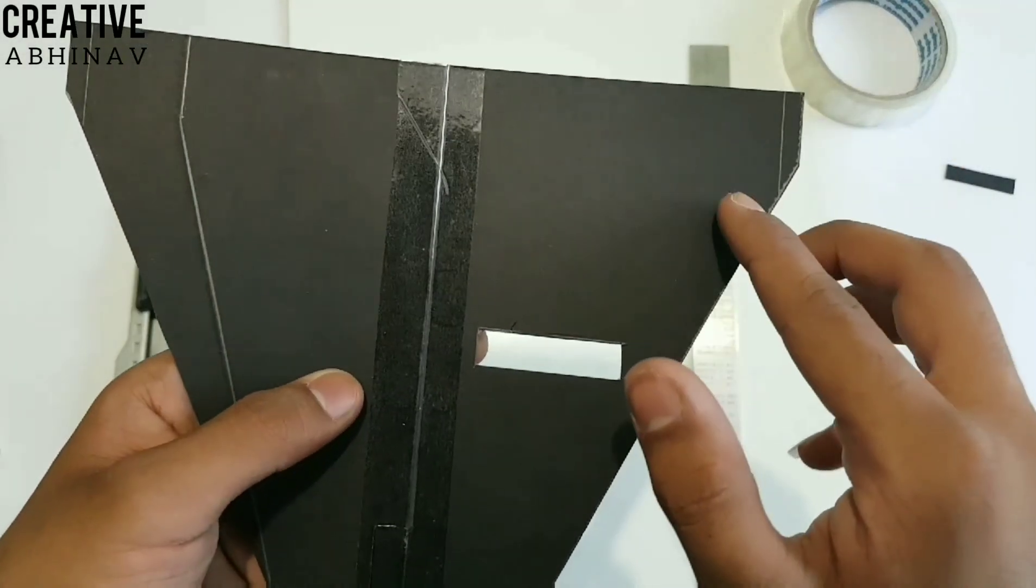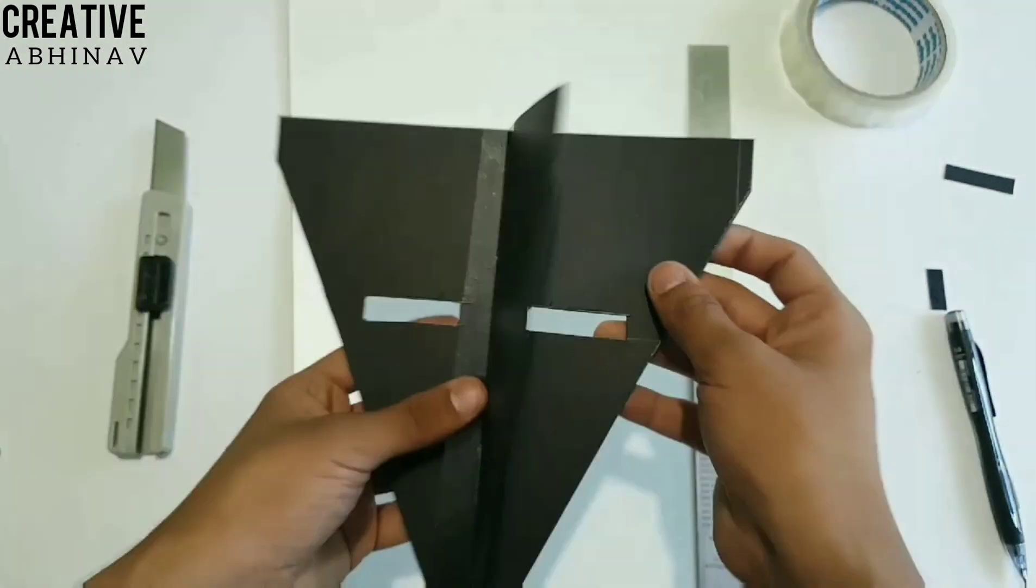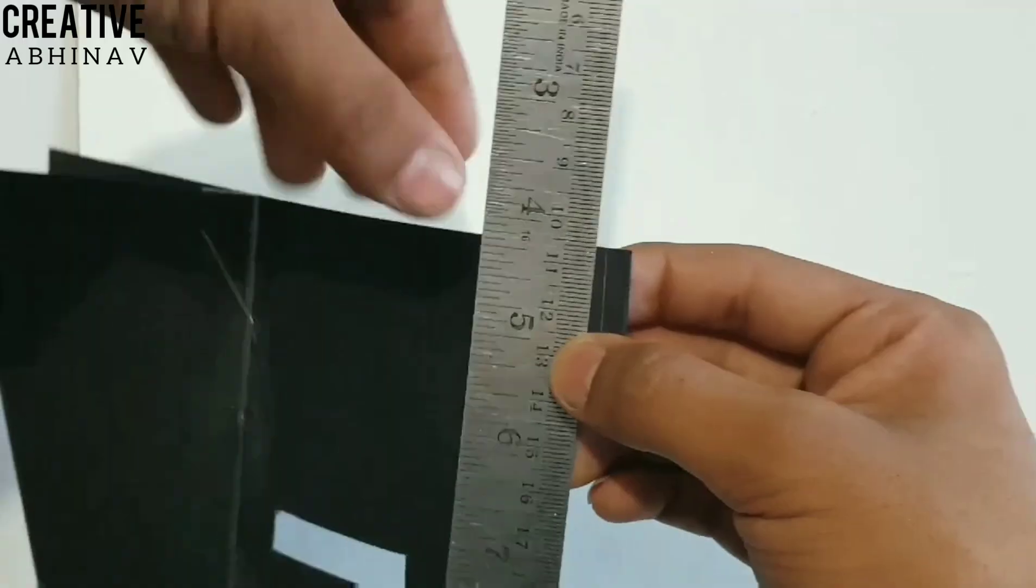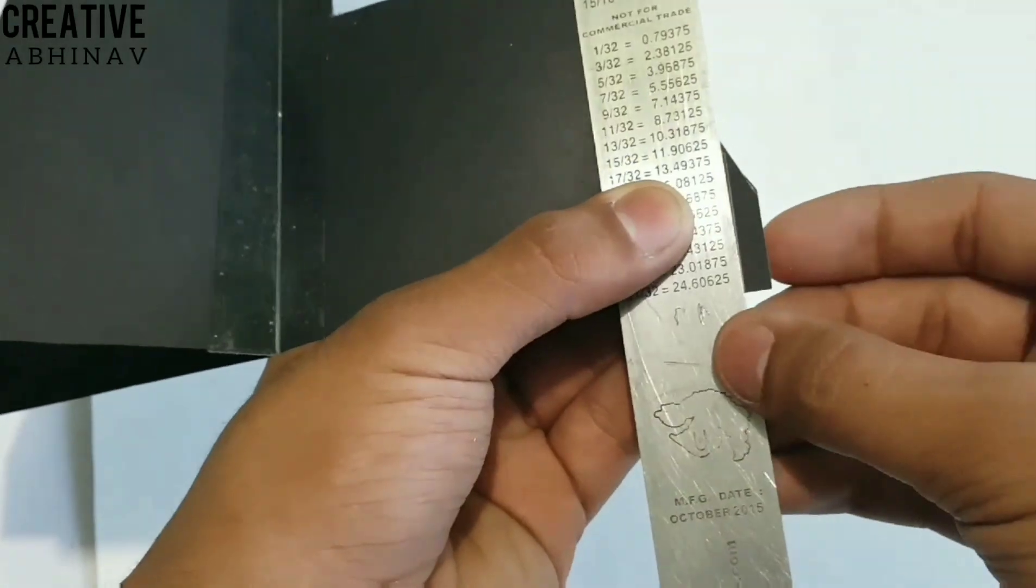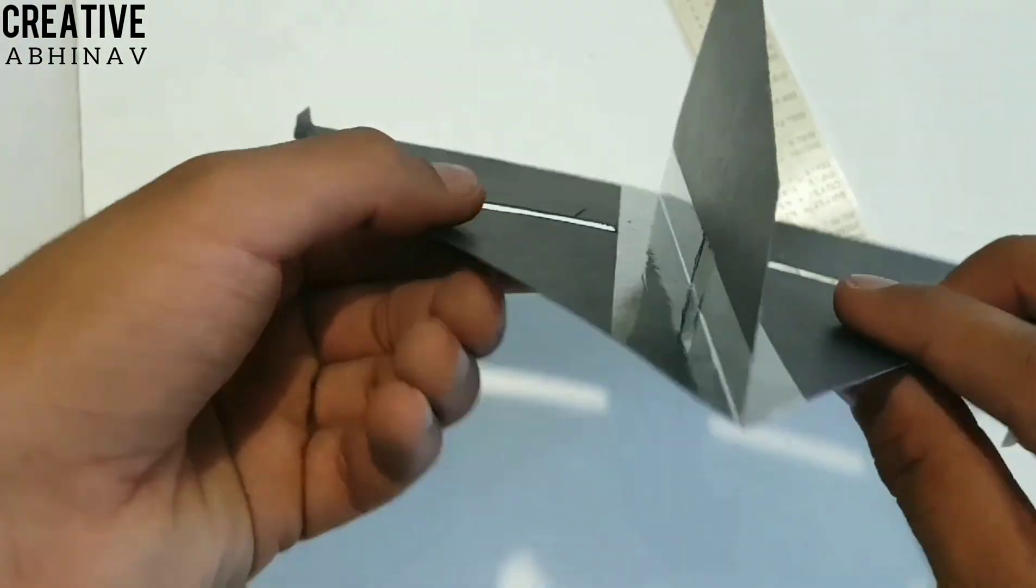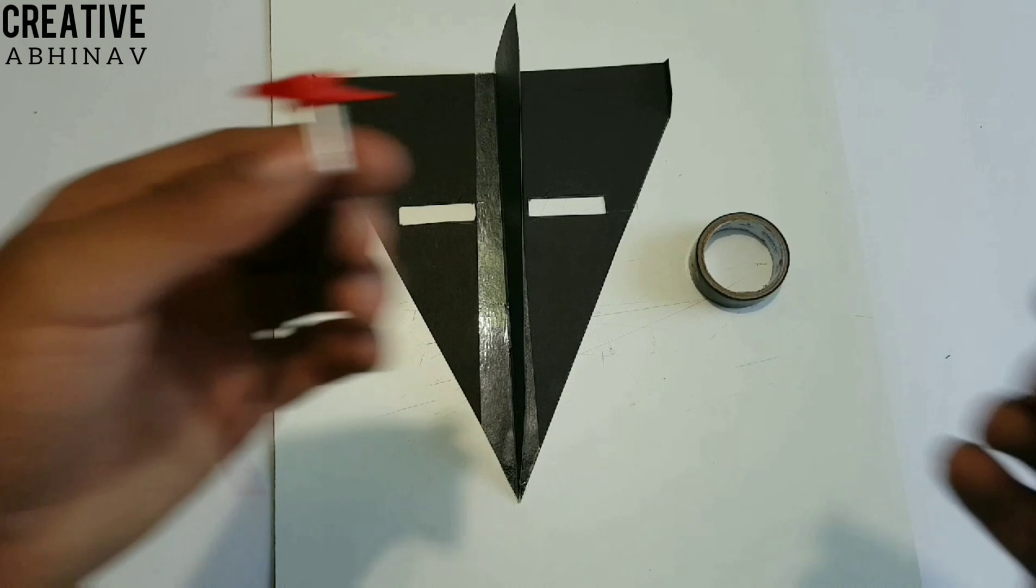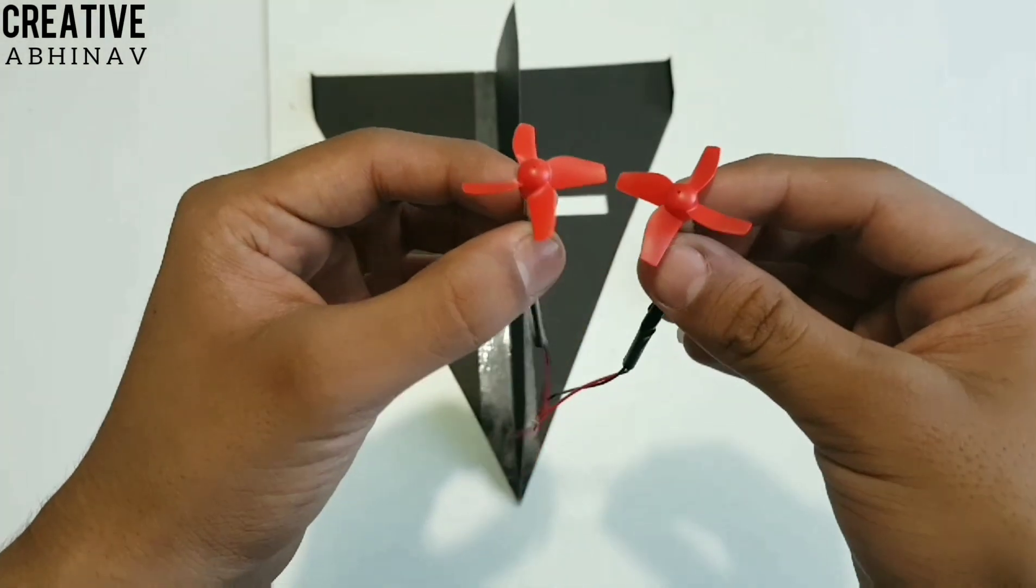Then we have to fold the side corners of our paper airplane. Now we have to paste the coreless motors on our paper airplane.